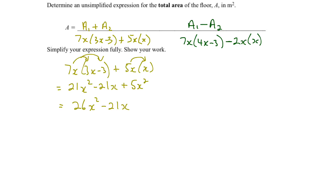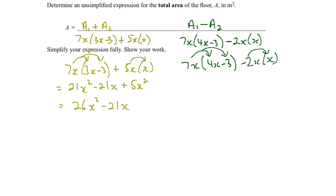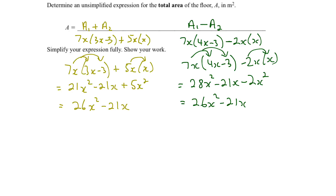Now let's see what happens when we try the second expression: 7x times (4x minus 3) minus 2x times x. Distributing across the brackets: 7x times 4x is 28x squared; 7x times minus 3 is minus 21x; and negative 2x times x is minus 2x squared. Collecting like terms — 28x squared minus 2x squared — gives us 26x squared minus 21x. You can see that we have the same answer.